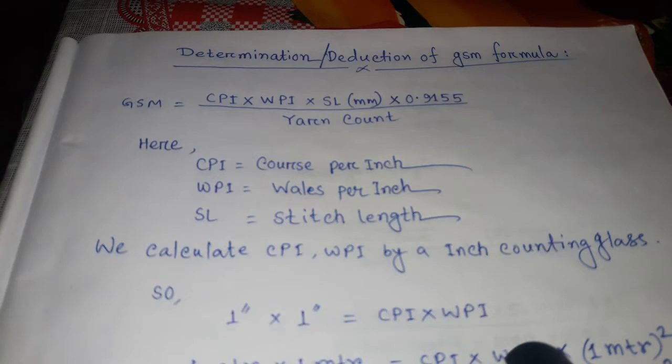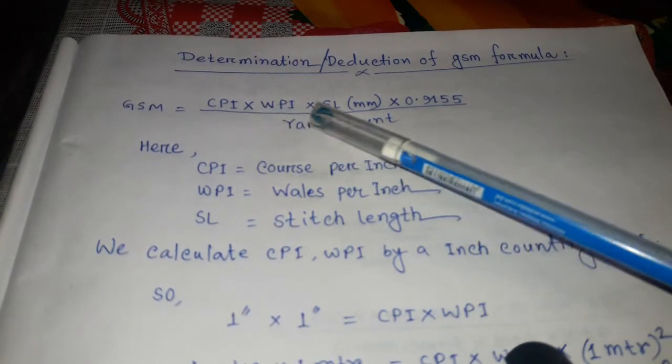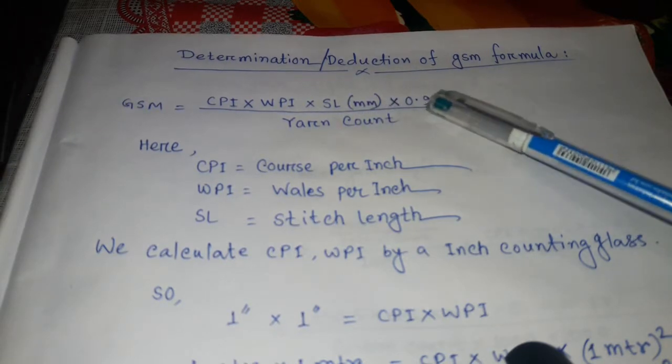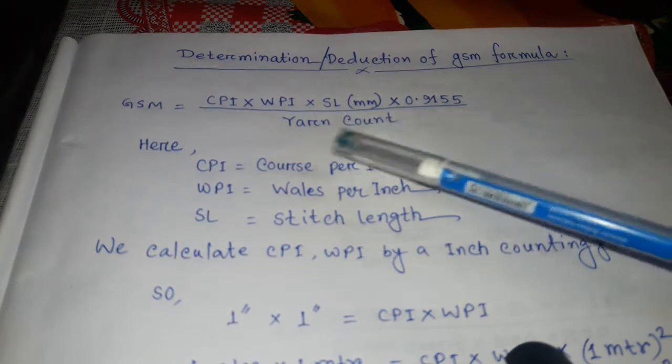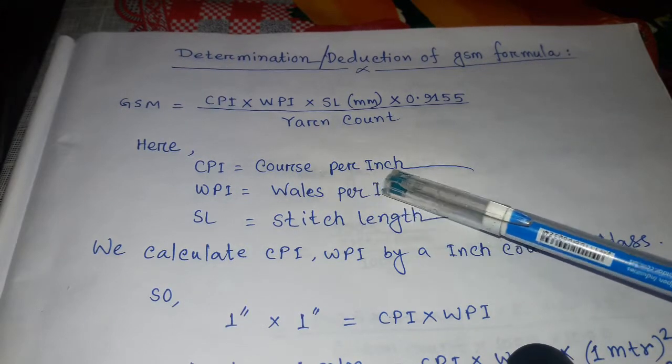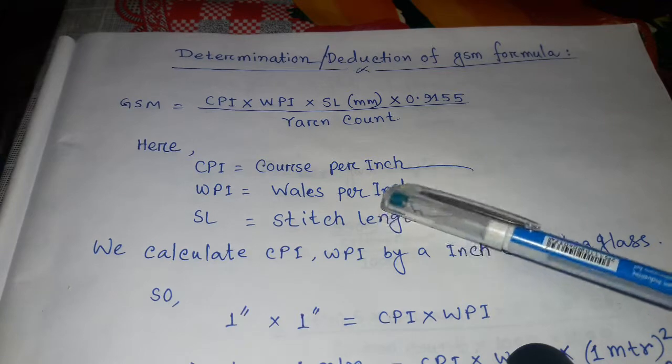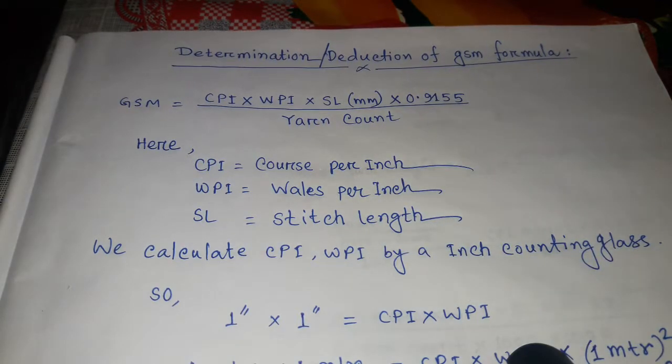GSM equals CPI times WPI times stitch length in millimeters times 0.9 divided by yarn count. Here, CPI equals course per inch, WPI equals wales per inch, and SL equals stitch length. Now we calculate CPI and WPI.